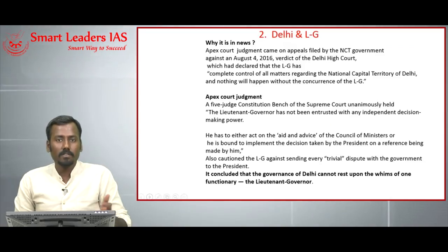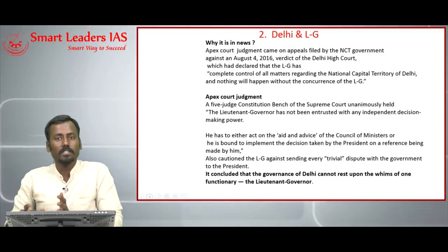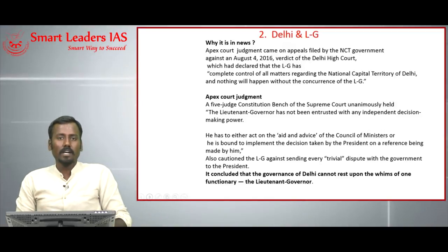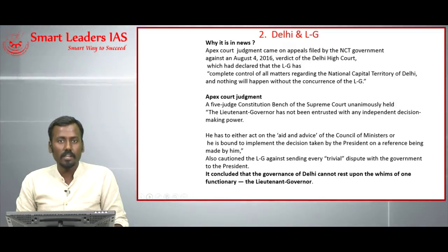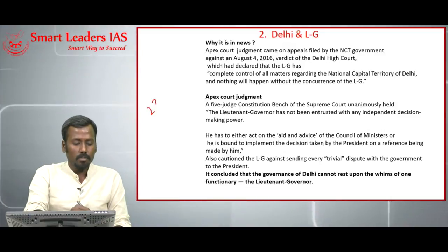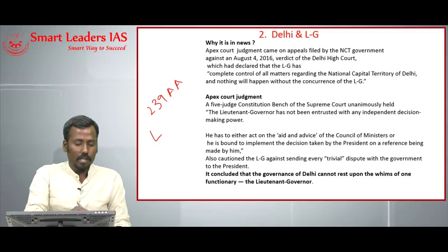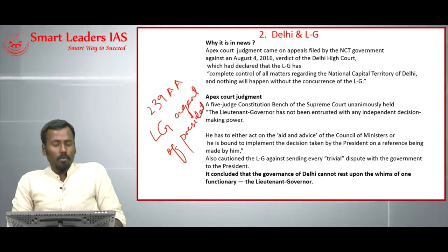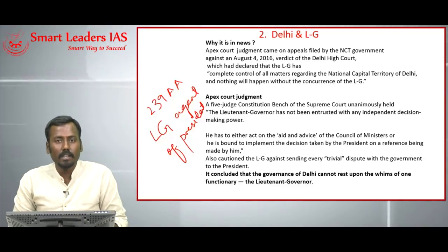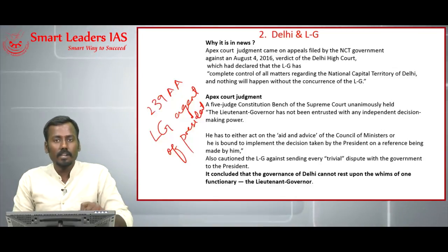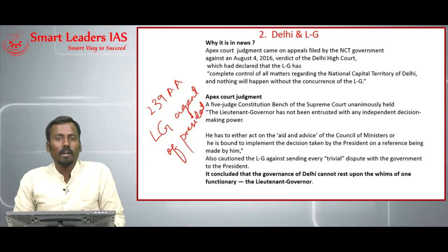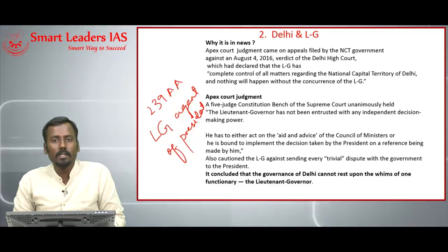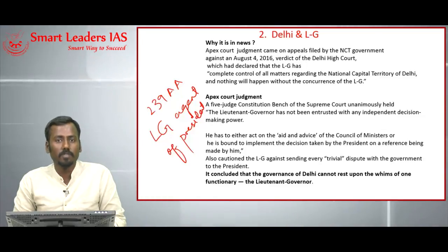The next topic is about the recent Supreme Court verdict defining the extent of power of the Lieutenant Governor as far as Delhi is concerned. Delhi has been accorded a special status under Article 239AA of the Indian Constitution, as per which Delhi has a Lieutenant Governor who is an agent of the President. The roles of the Lieutenant Governor have been clearly defined in Article 239AA, but there have been cases of overarching power being exerted by the Lieutenant Governor, which has been questioned in various judicial forums.